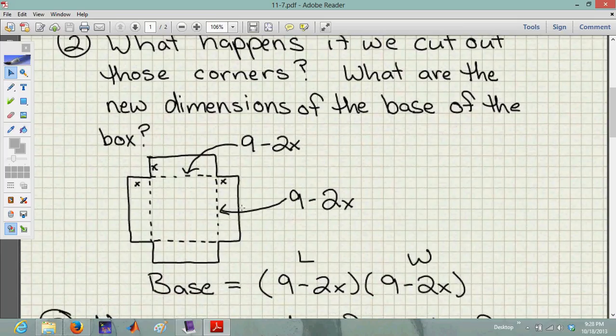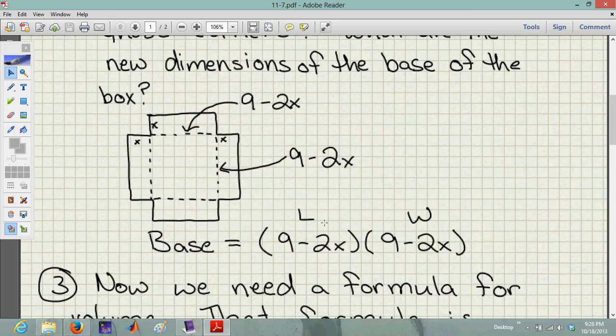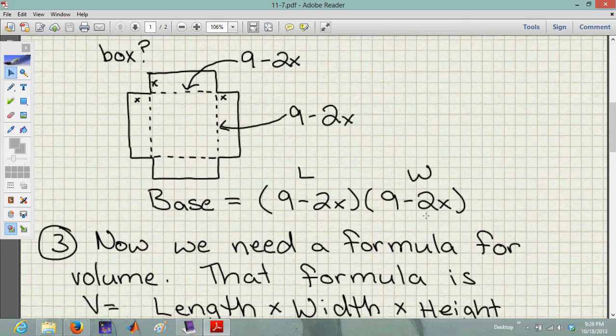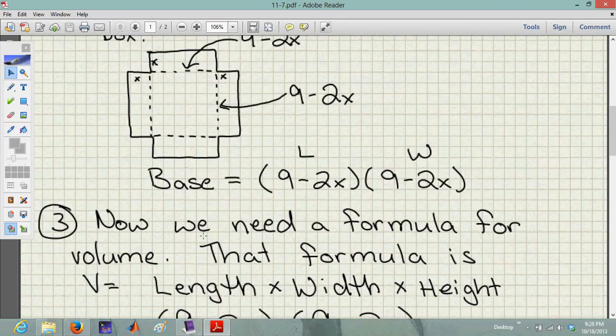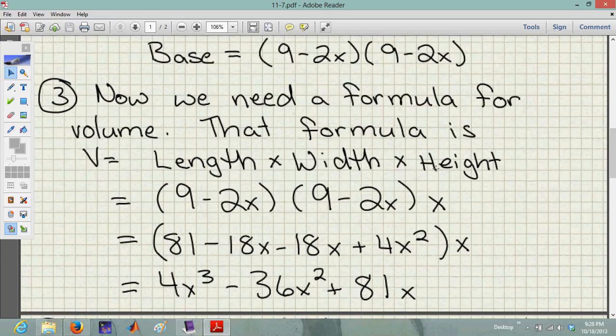So that tells me that my base, the base of my box, is going to be 9 minus 2x times 9 minus 2x. We don't know what the x is yet, but it doesn't matter because it's going to be the same for every time we see that x. So we want to optimize volume. They're asking us to find the best volume that we can get out of this box, so we need the formula for volume. That formula is length times width times height.